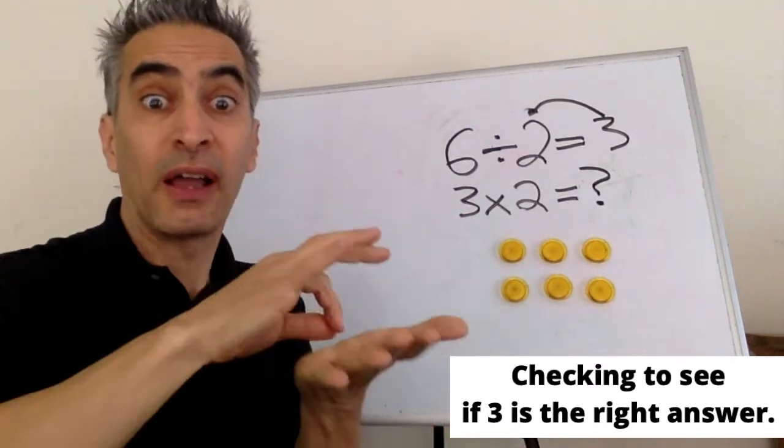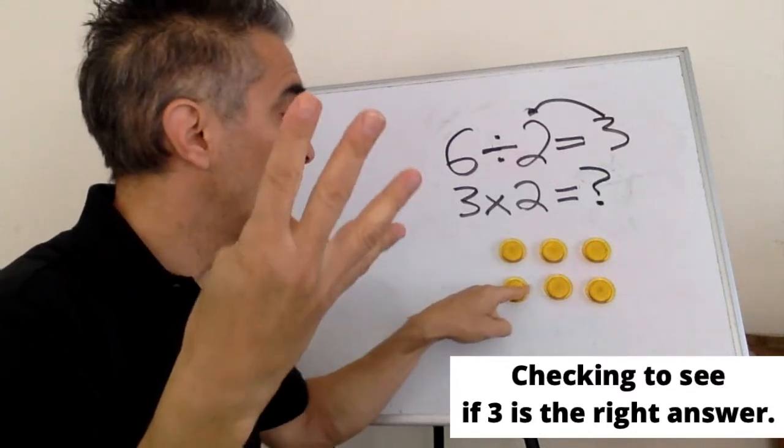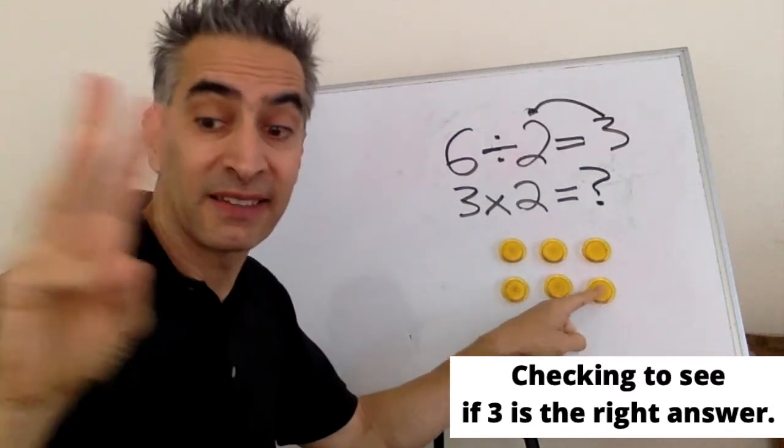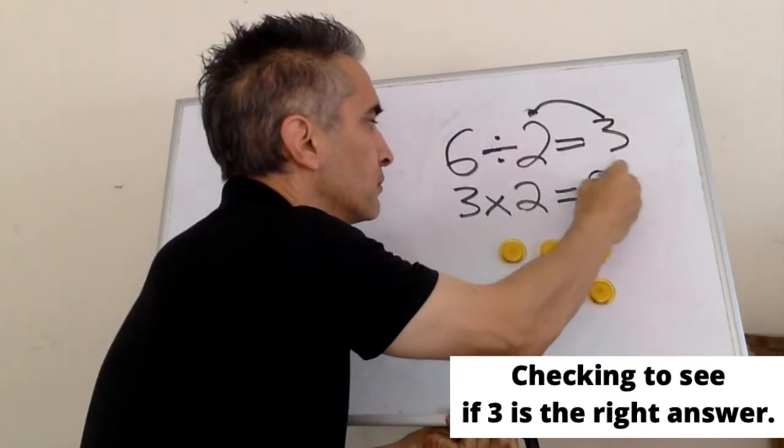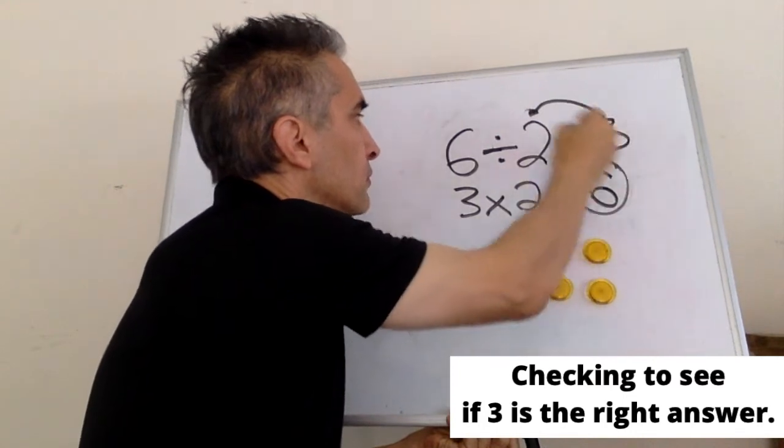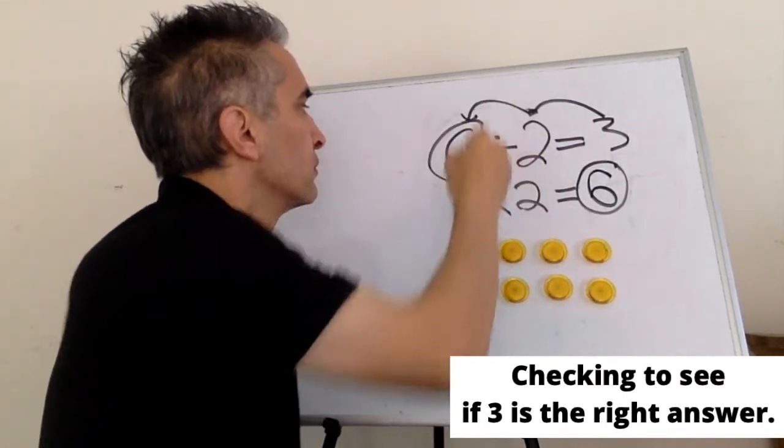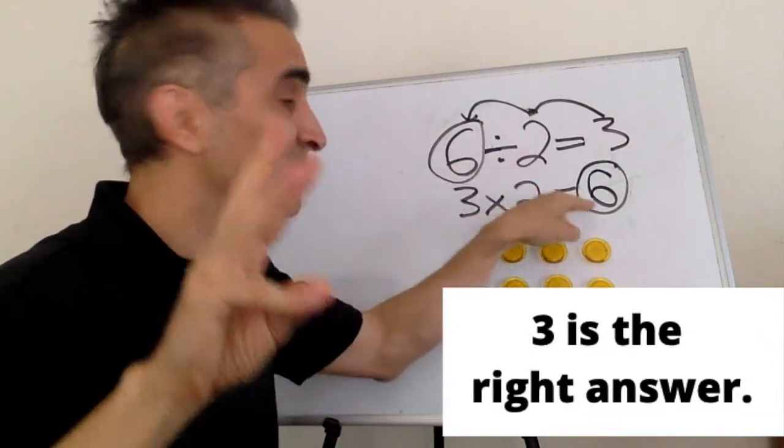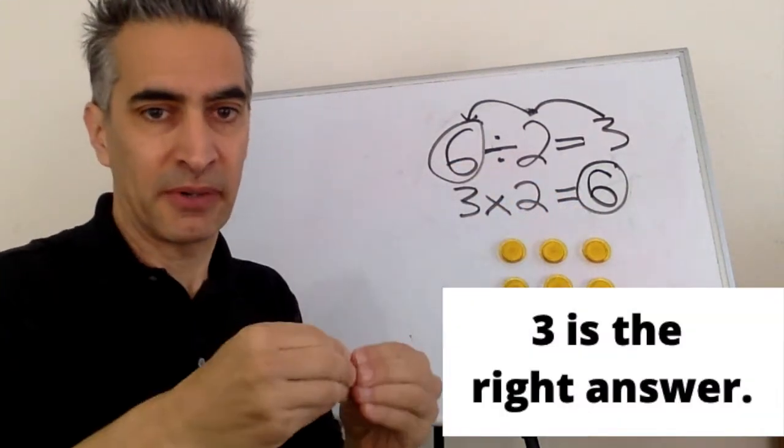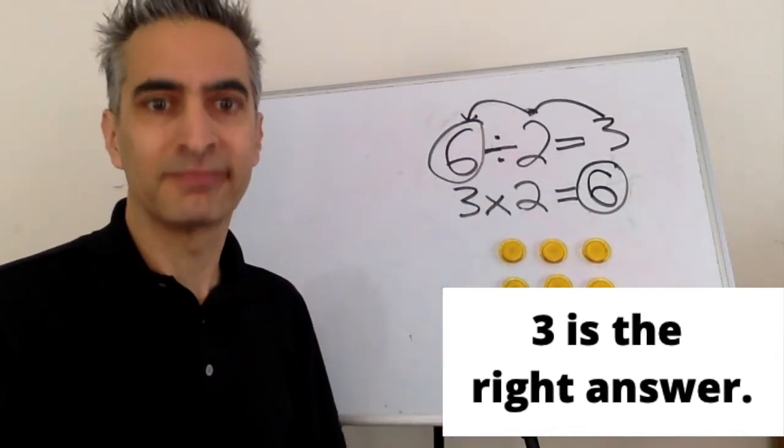Now, count everything. One, two, three, four, five, six. This six and this six are the same number. That means that three is the right answer.